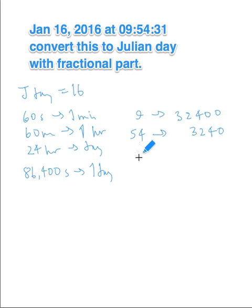And then the 31 seconds we don't have to convert because that's already in seconds. Alright, and we're going to add up these numbers and get 35,671 seconds. We're going to divide that by 86,400 because that's the total number of seconds in a day.